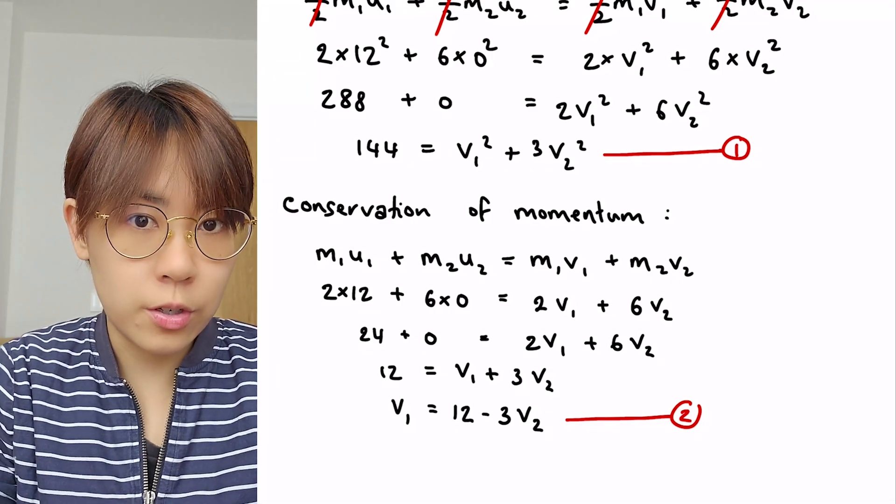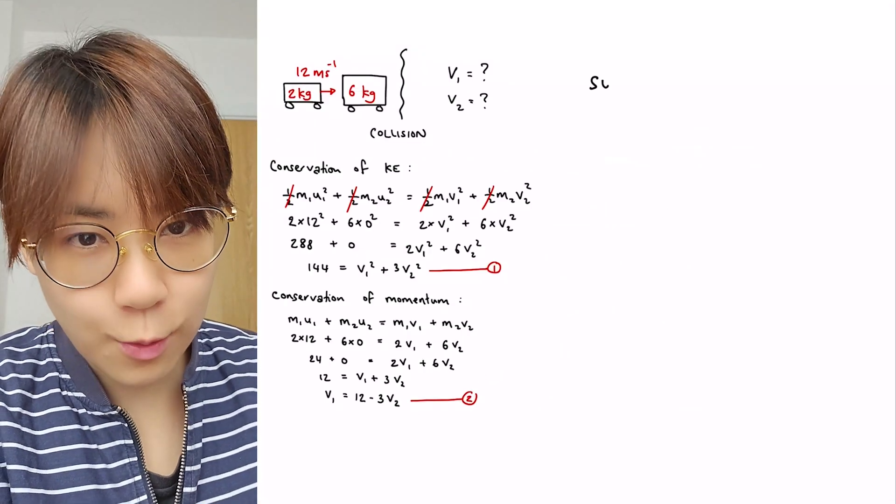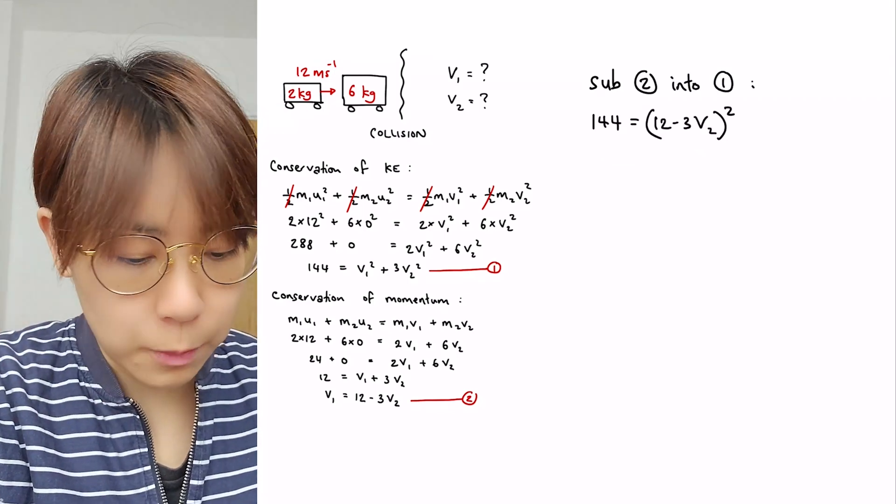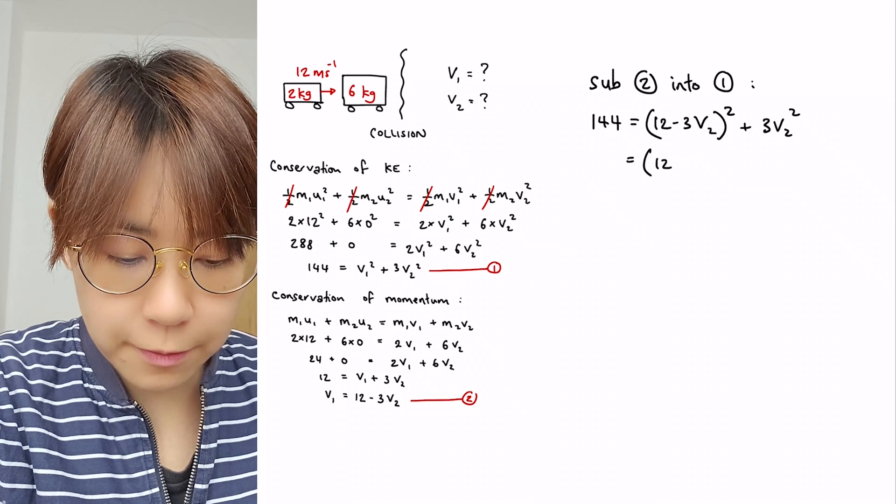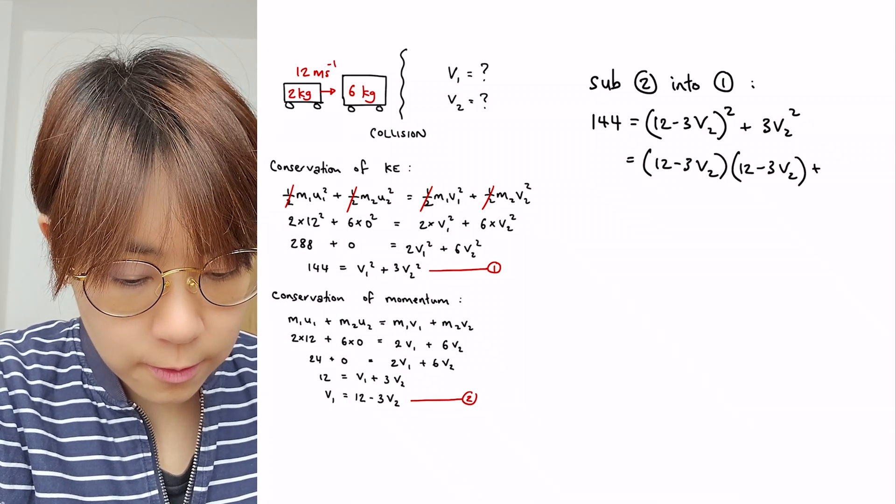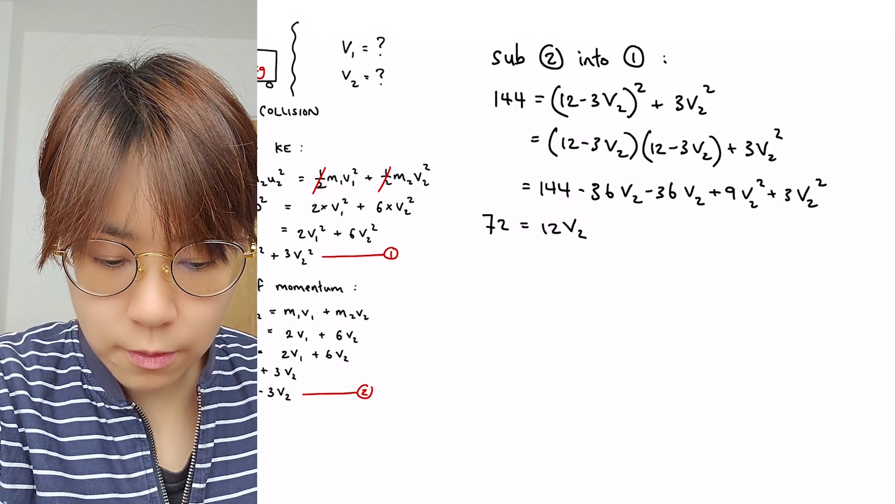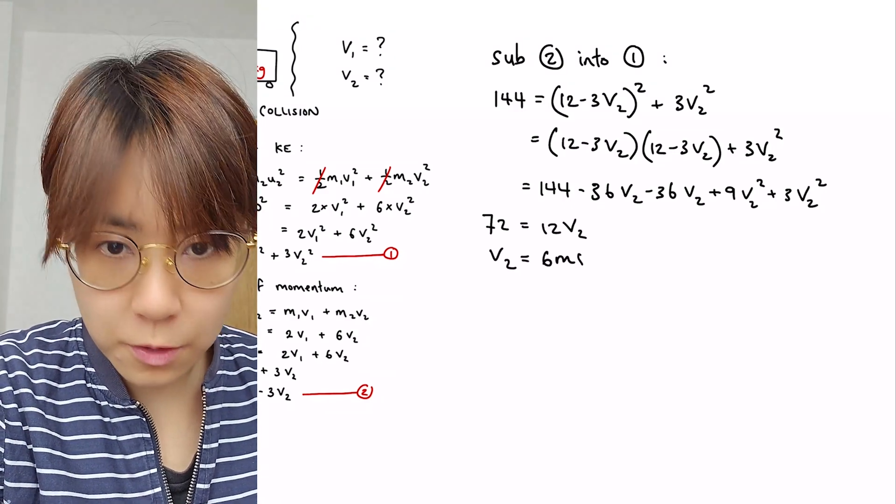We now have two equations. We will substitute equation two into equation one. Once we expand this bracket, multiply out, and then simplify, we get 72 is equal to 12 v2. So v2 is 6 meters per second.